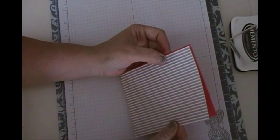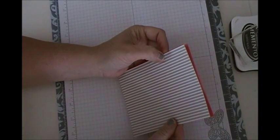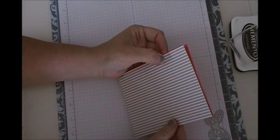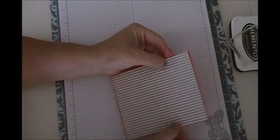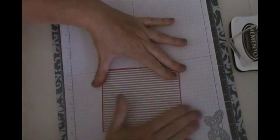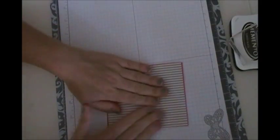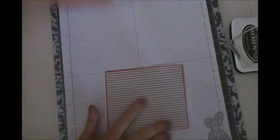And as you can see here, I'm just doing my best to line it up, make sure it's as evenly as possible. And then I'm going to take the triple banner punch, and I'm going to make it into a banner piece.